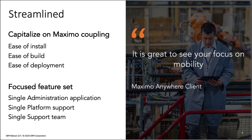Let's take a look at this release. First, we mentioned streamlined — how did we do this? With Anywhere 764, we increased our Maximo coupling and capitalized on additional features available within Maximo enterprise asset management. The result is it makes it easier to install the Anywhere platform, easier to build the Anywhere applications, and easier to deploy them. We have streamlined to a single Anywhere administration application and a single platform support matrix.